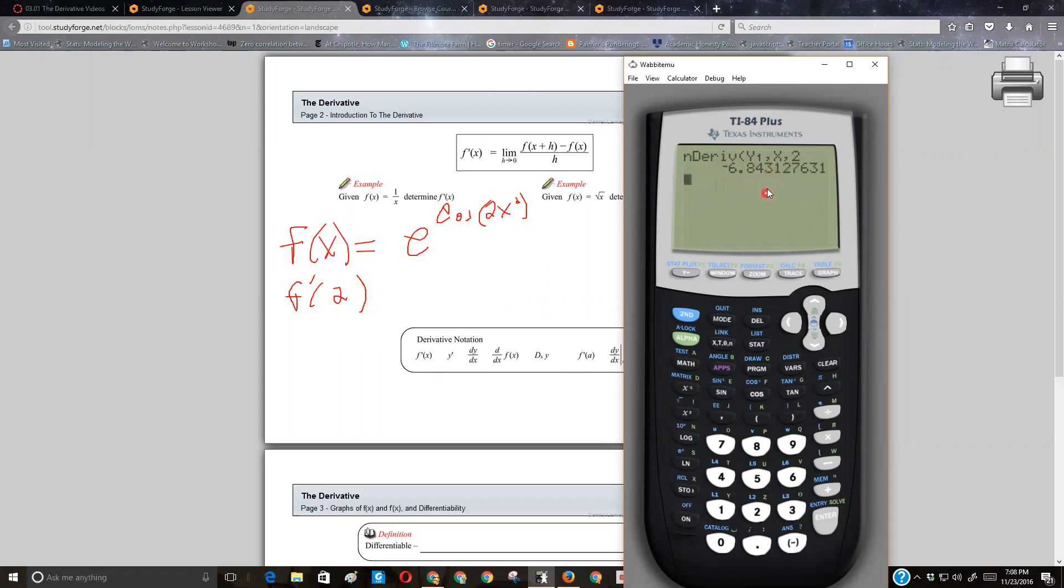Remember on the AP calc test, they want three decimal places. So that would be a better estimate of what the derivative is. So that's using your numerical derivatives on your calculator to find a derivative of a function at a point. And I hope that helps you do this.